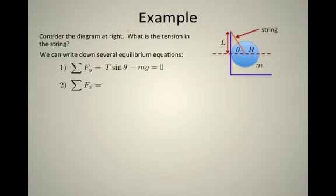There's also the sum of the forces in the x direction. This thing is not moving horizontally either. That's the normal force pushing back to the right from the pole and the tension of the string pulling over to the left, so that's going to be minus T cos θ. That's still not enough information. We don't have everything we need yet because we have two equations and three unknowns here.